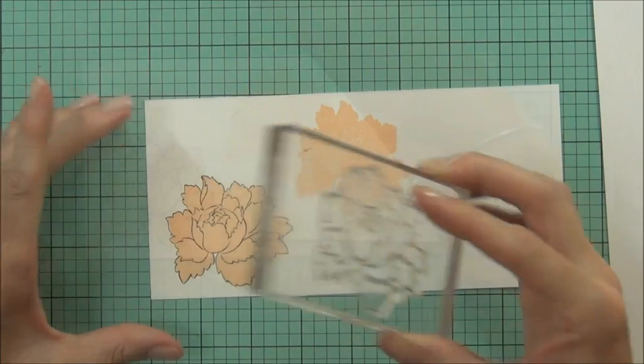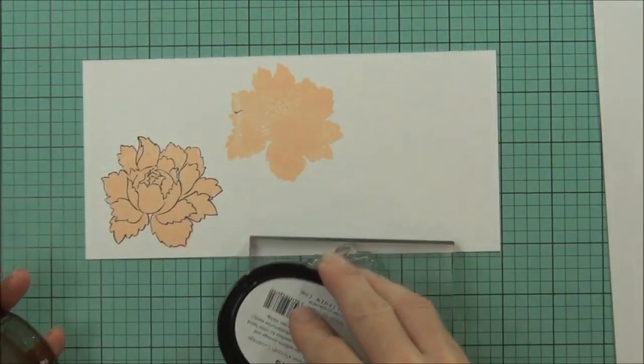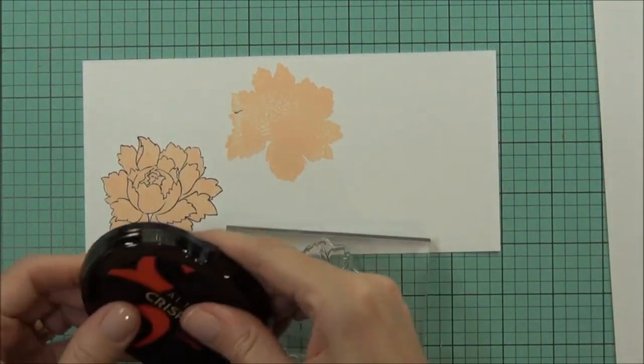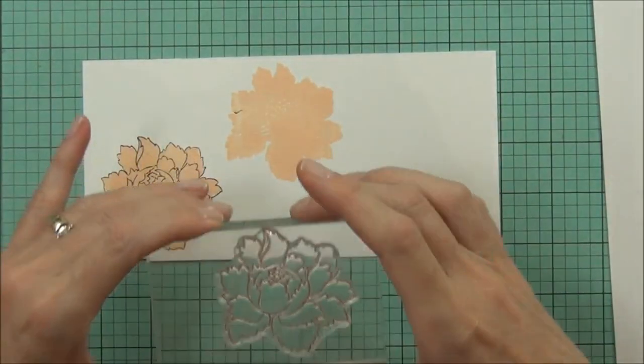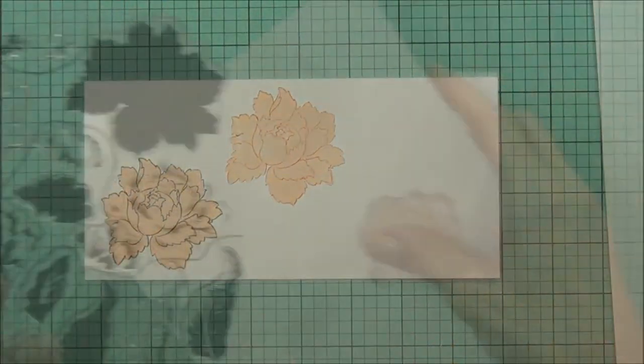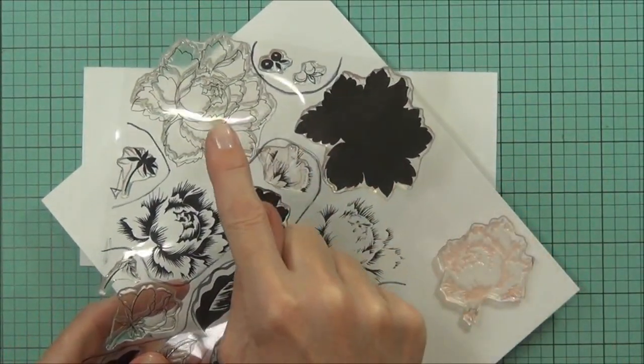I'm going to be using this jet black ink on my card today, but for the variation I thought I'd just show you what a difference it can make to use colored ink for the outline. This is the crimson crisp ink.